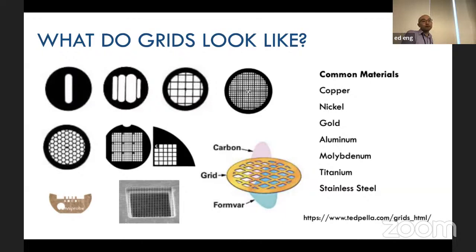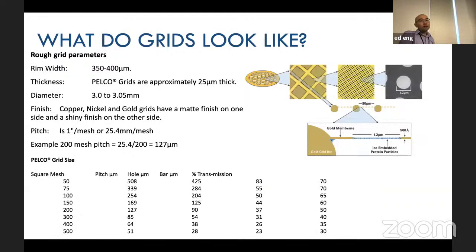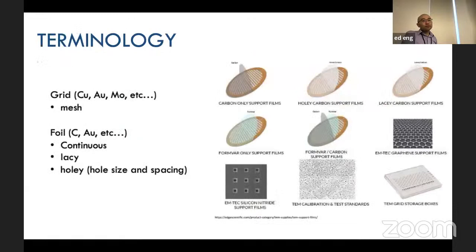The mesh number — 300 or 400 mesh — relates to pitch, not the number of squares. You'd need to do some math and check manufacturer specs for grid bar thickness and square dimensions.